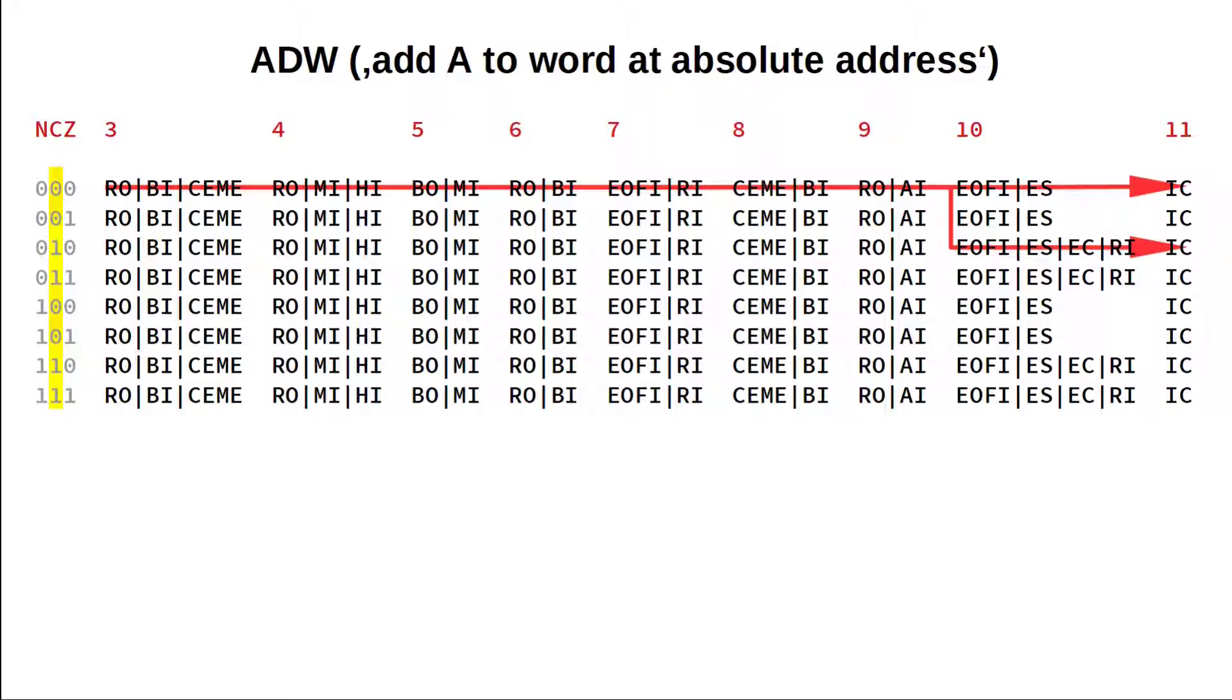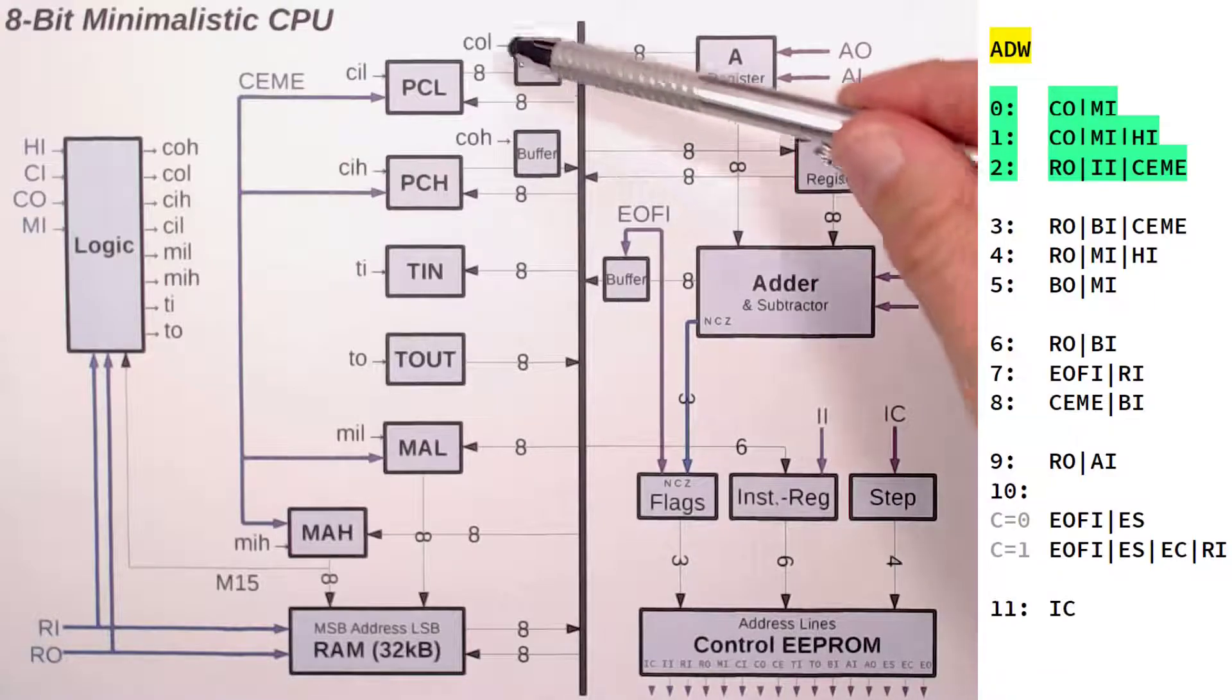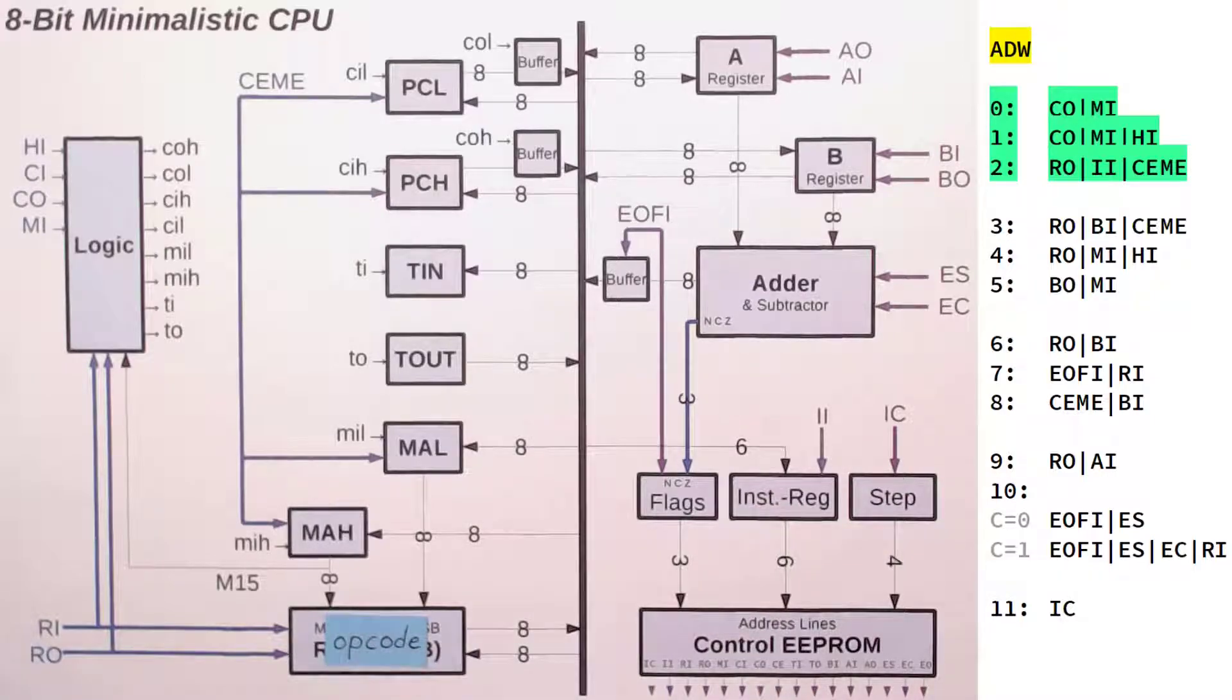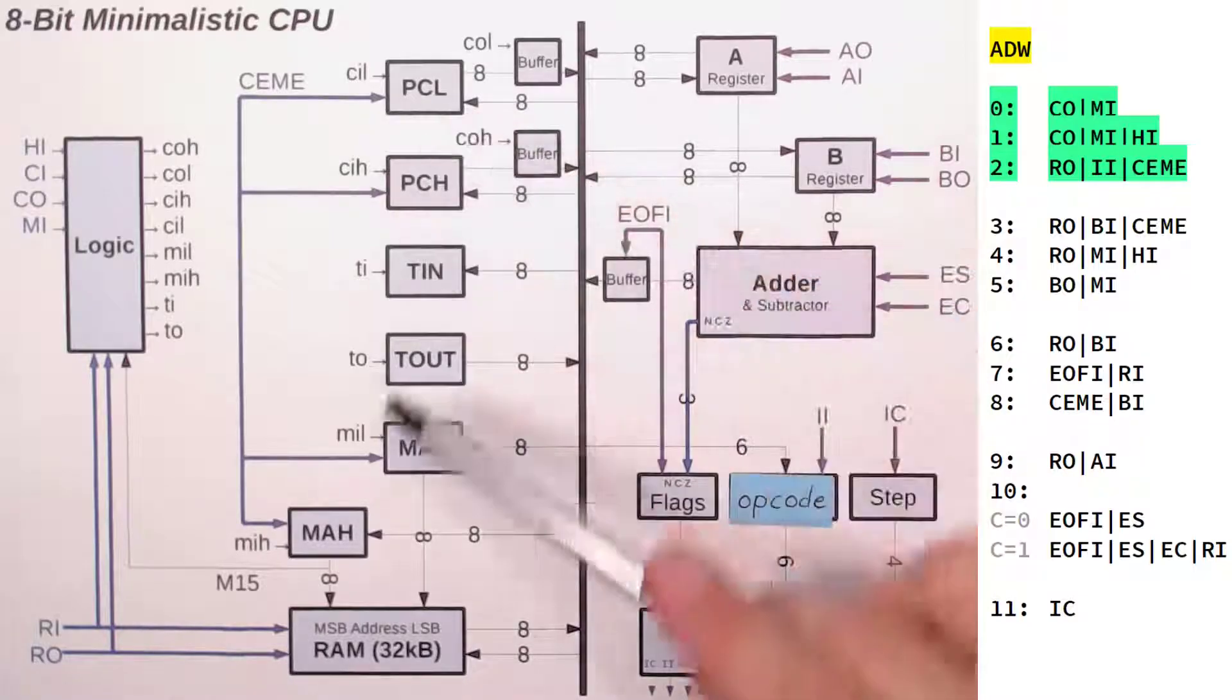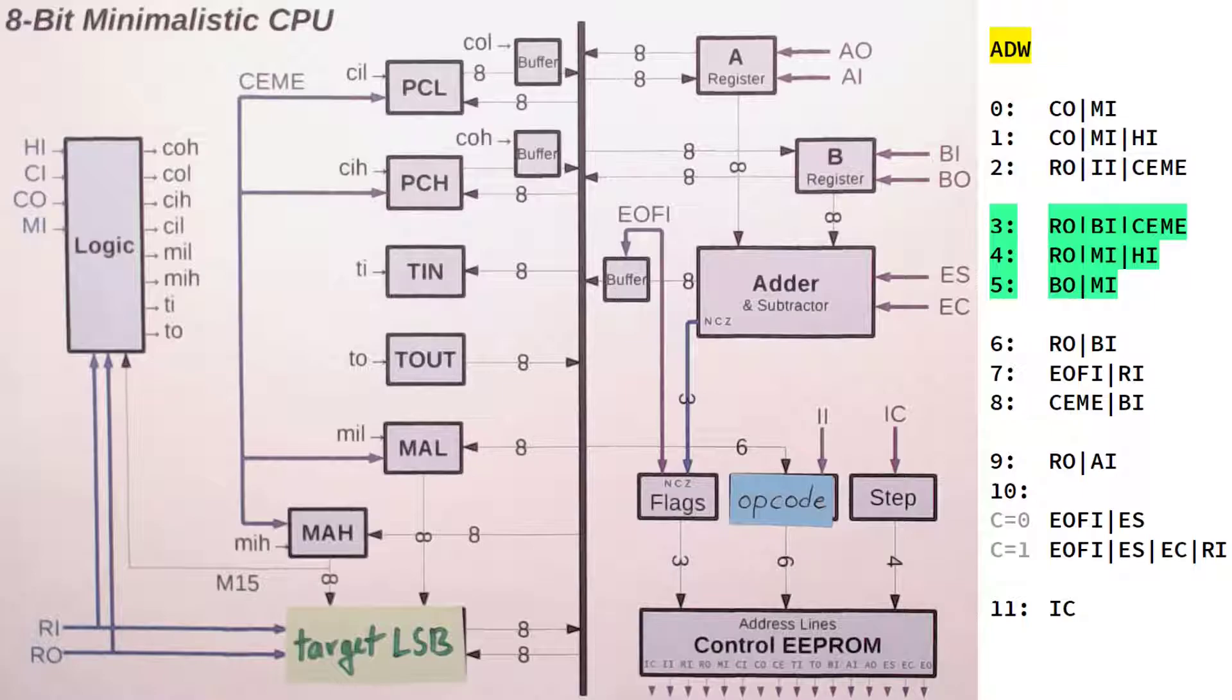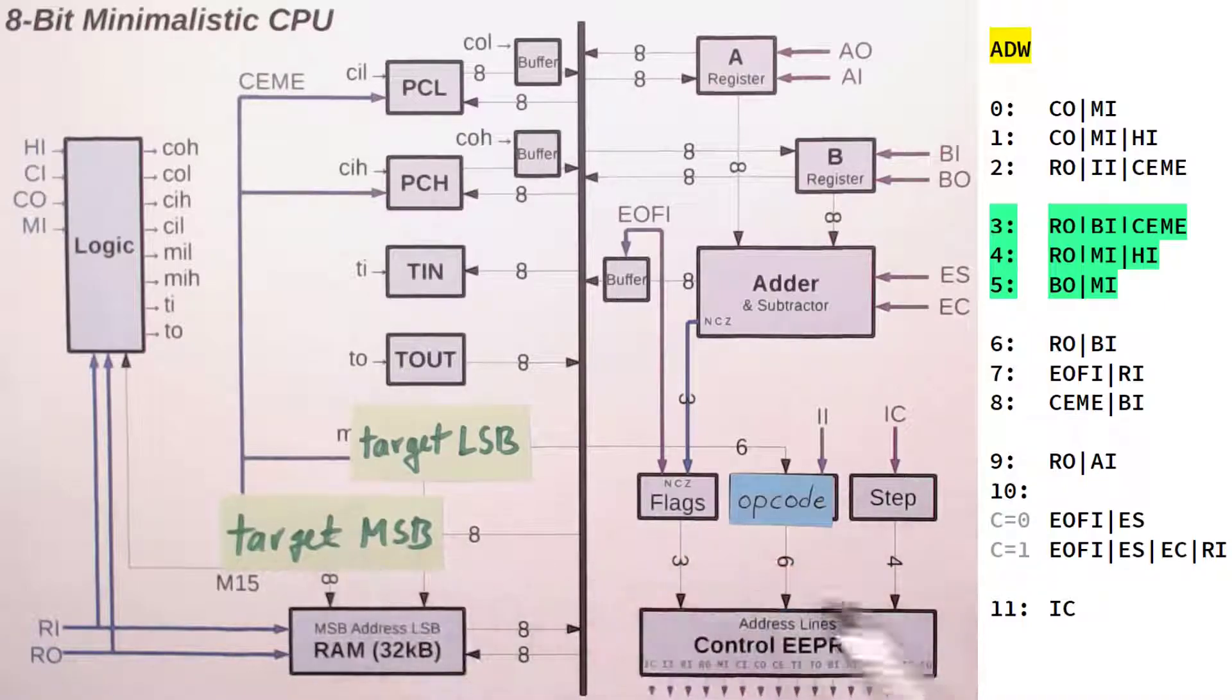But let's take the time and go through it step by step. As always, the first three steps move the content of the program counter into the MAR, exposing the opcode. RAM out, instruction in, count enable moves this opcode into our instruction register and increments the program counter and the MAR, exposing the LSB of our target address. The next three steps move this target address into the MAR so that now we can access the word's LSB.